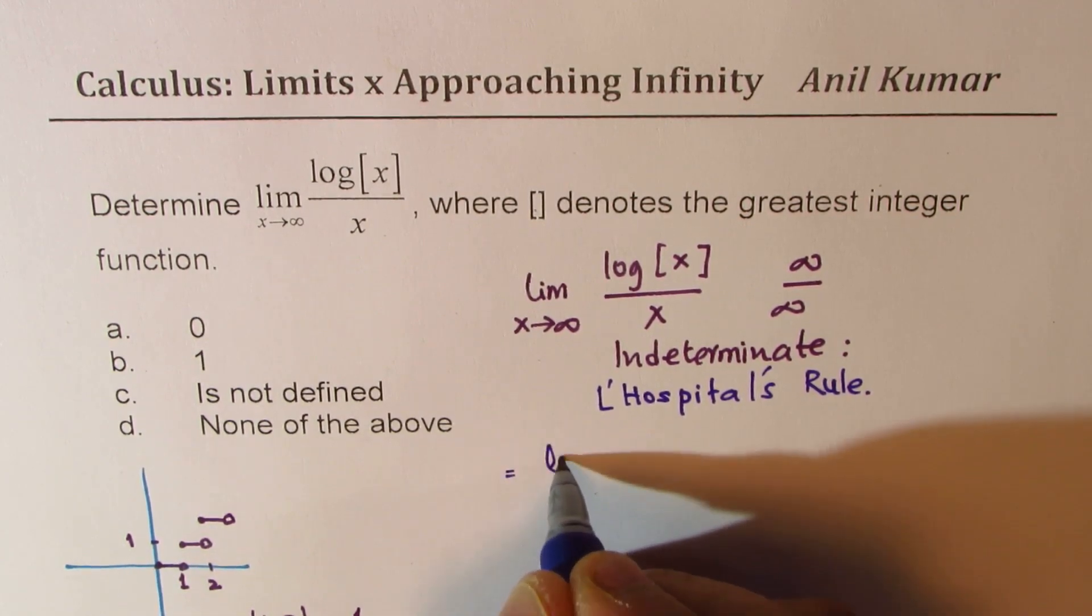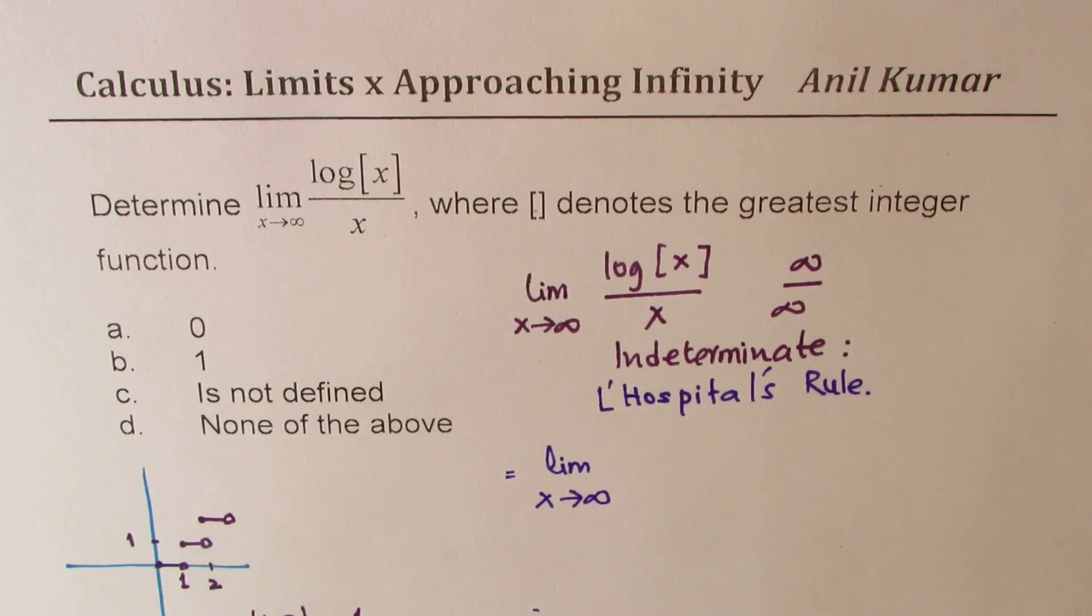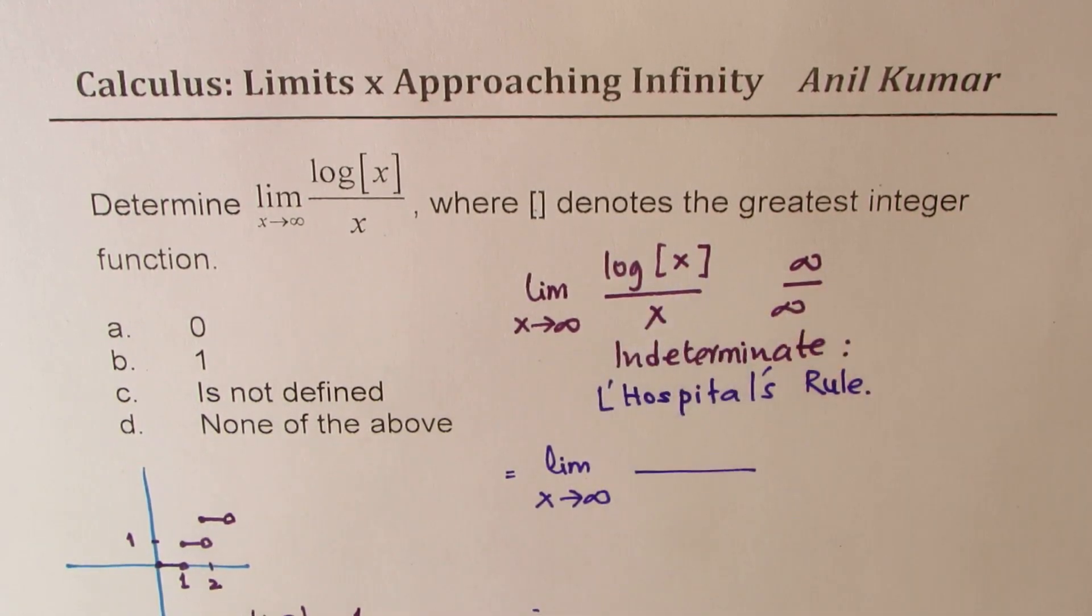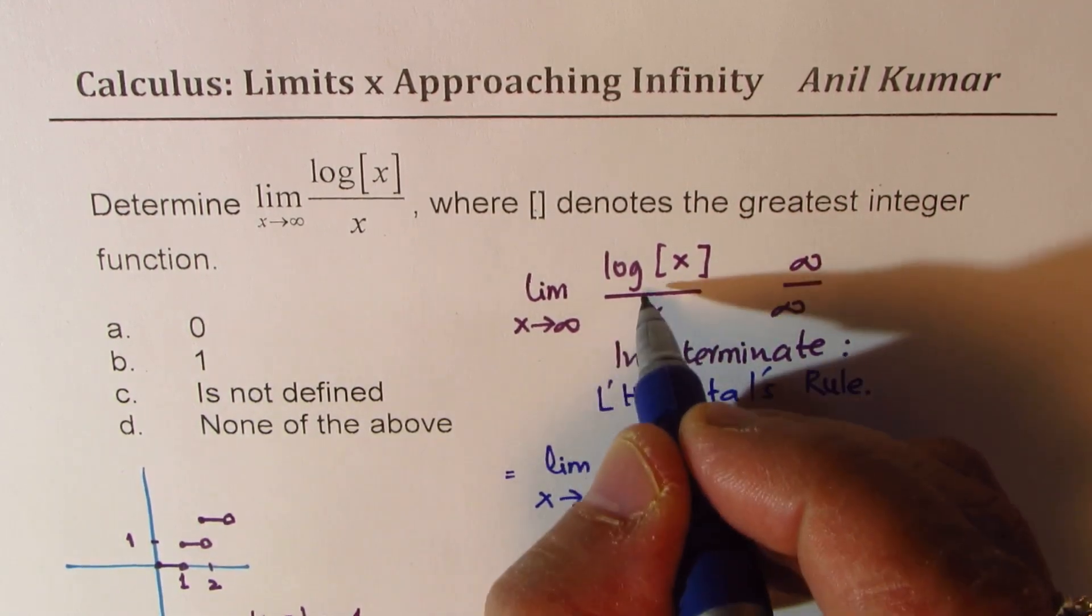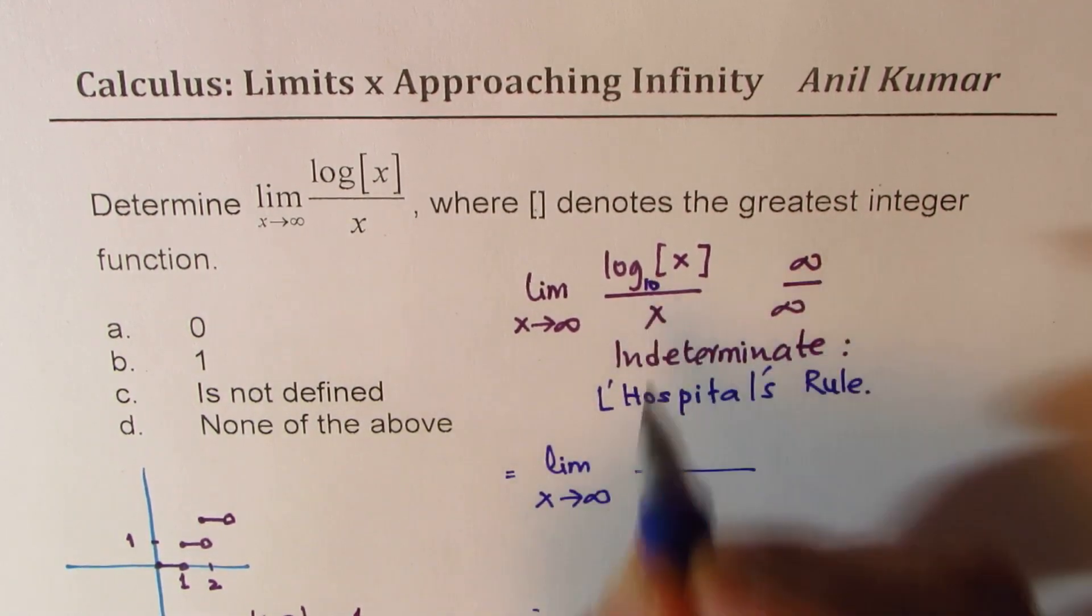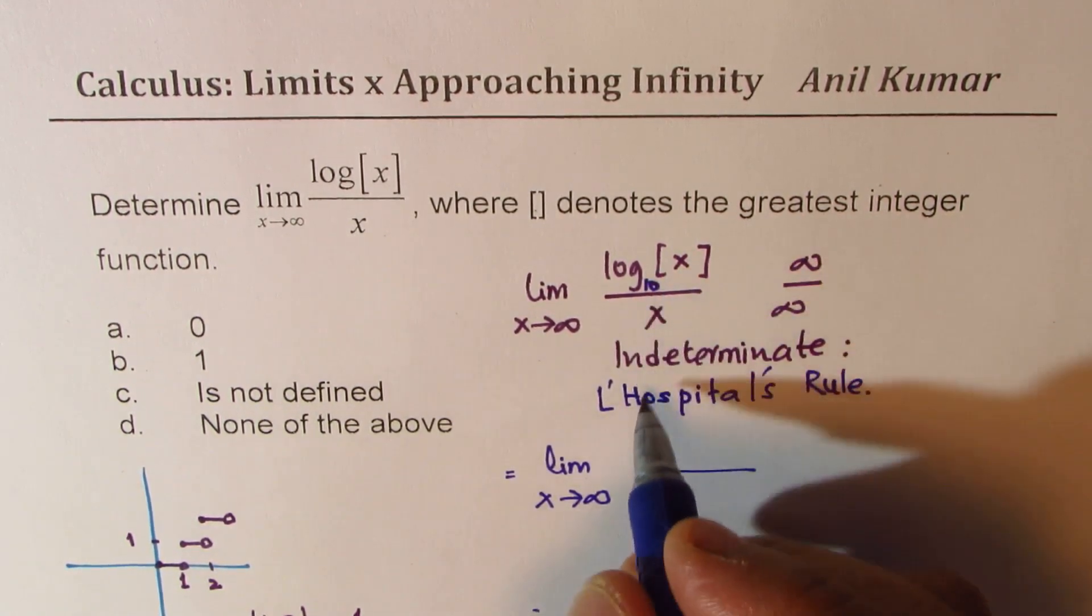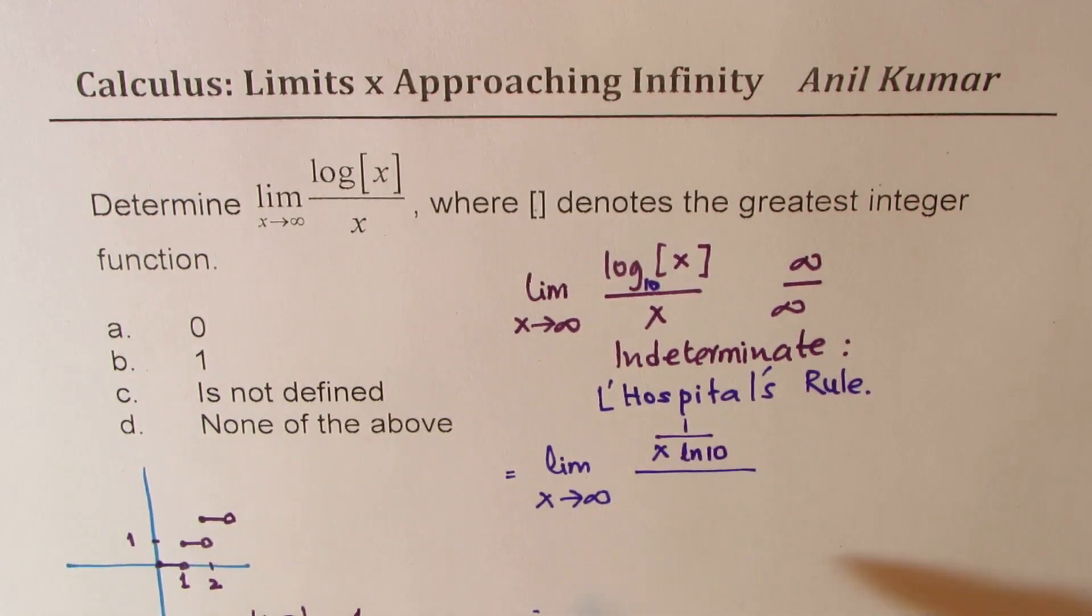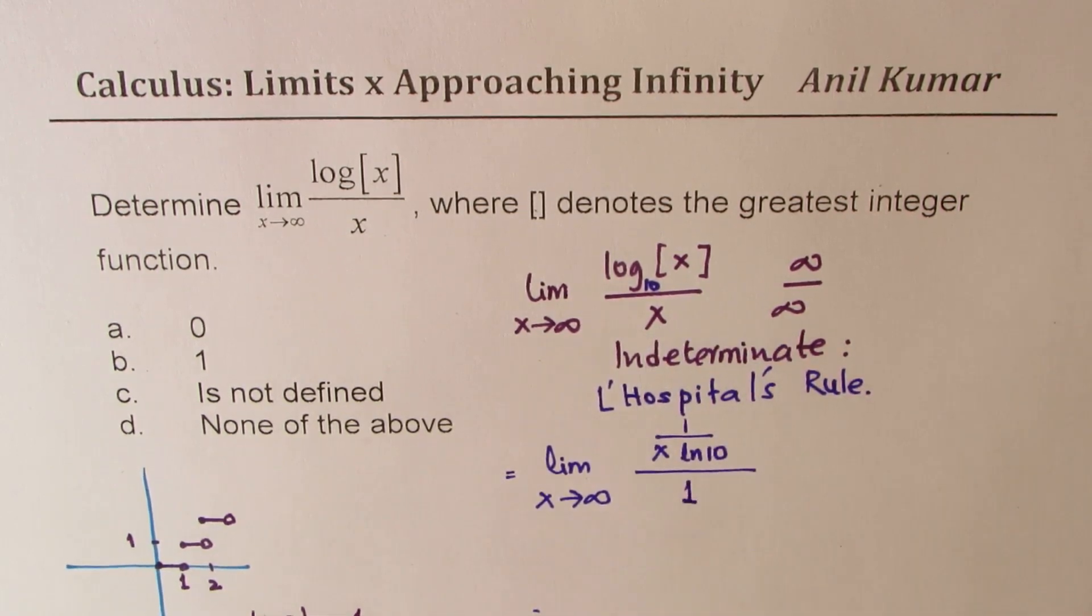So we could write this as equal to limit when x approaches infinitely large value for derivative of log of x. This is to the base 10. When we normally write like this, it is to the base 10. So the derivative of this function is 1 over x times ln 10. And the derivative of x, which is in the denominator, is just 1.